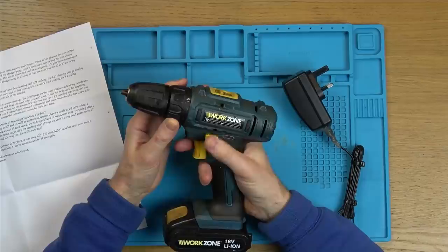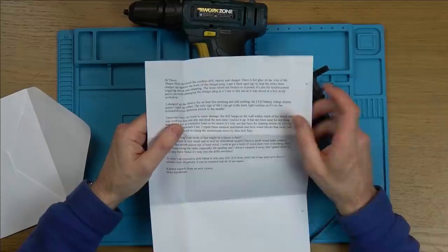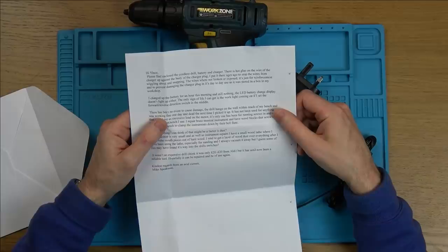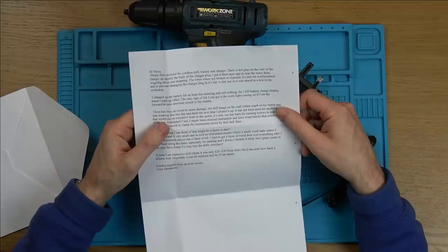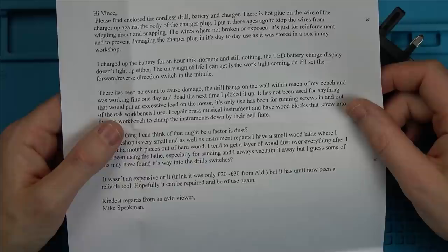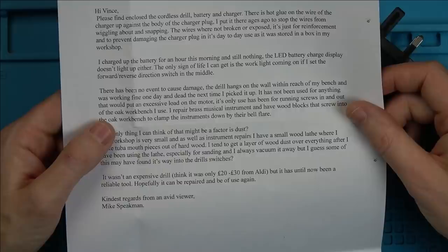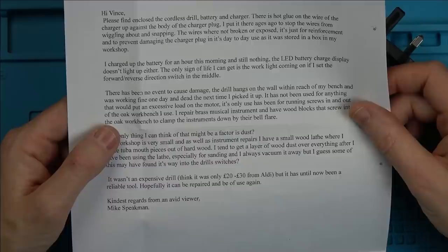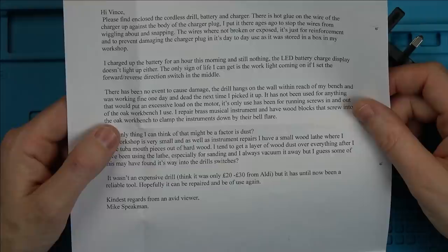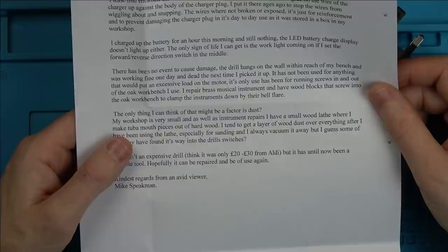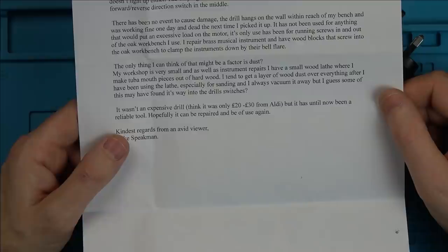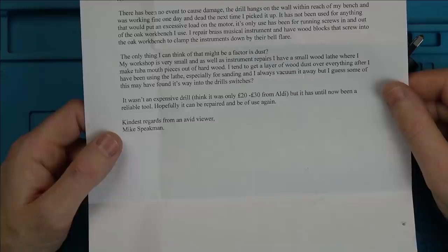Right, let's see what it says here. It says, Hi Vince, please find enclosed a cordless drill, battery and charger. There is hot glue on the wires off the charger to stop the wires from wiggling and snapping. The wires were not broken, just for reinforcement. I charged up the battery for an hour this morning and still nothing. The LED battery charge display doesn't light up either. The only sign of life I can get is the work light coming on if I set the forward reverse direction switching to the middle. There has been no event to cause damage. The drill hangs on the wall and was working fine one day and dead the next. It has not been used for anything excessive, only for running screws in and out of the oak workbench. The only thing I can think of might be dust. It wasn't an expensive drill, I think it was £20 or £30 from Aldi, but it has until now been a reliable tool. Hopefully it can be repaired. Kindest regards from an avid viewer, Mike Speakman.